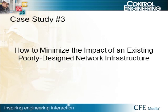On to case study number three: how to minimize the impact of an existing poorly designed network infrastructure. This case study follows a project where an existing network was very rudimentary — meant mainly to allow maintenance people to access PLCs from a central location. Standalone HMIs talked to their local PLC but not really anywhere else. We had to come in with a whole new process center and tie into this network.